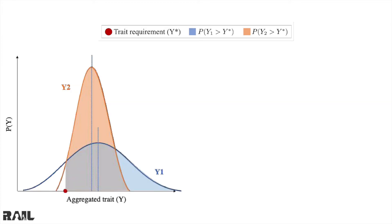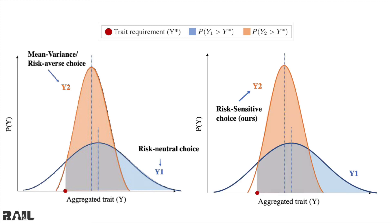Let us look at another toy example, except this time the risk-averse choice and the risk-neutral choice are not the same. Again, because the risk-neutral choice is just looking at maximizing the expected payoff, it chooses Y1, the blue allocation. Whereas the risk-averse choice, which is looking at both maximizing the expected payoff but minimizing the worst-case scenario, chooses Y2, the orange choice. Our risk-sensitive method would choose allocation Y2 because it has a larger probability of satisfying the trait requirements.